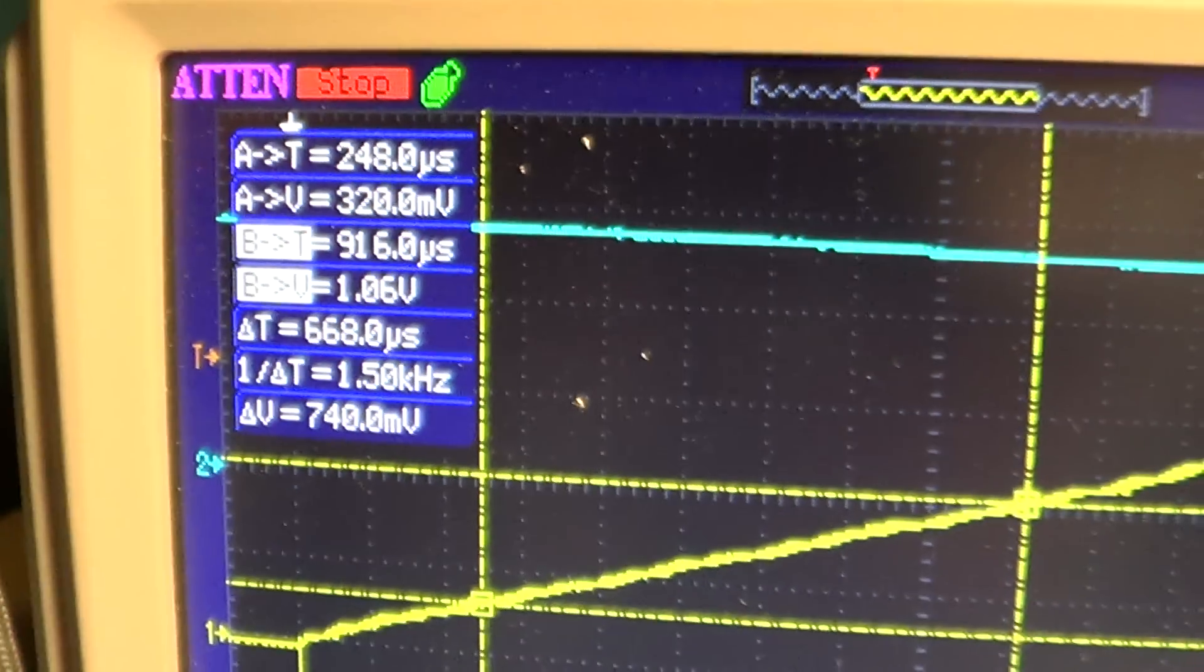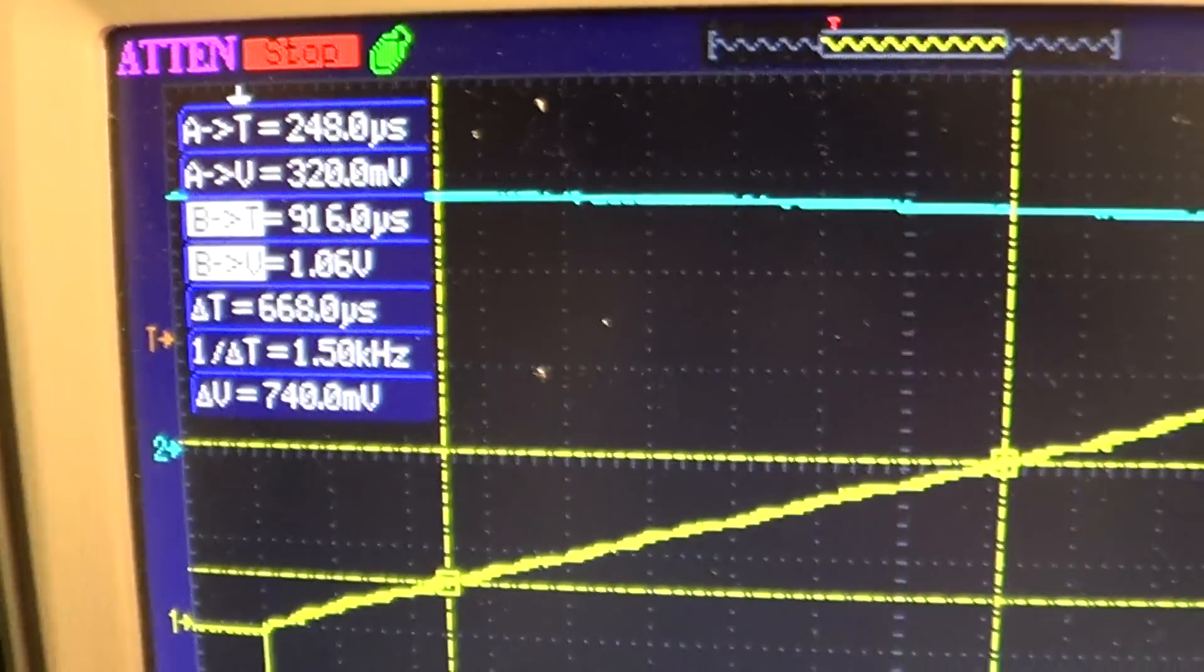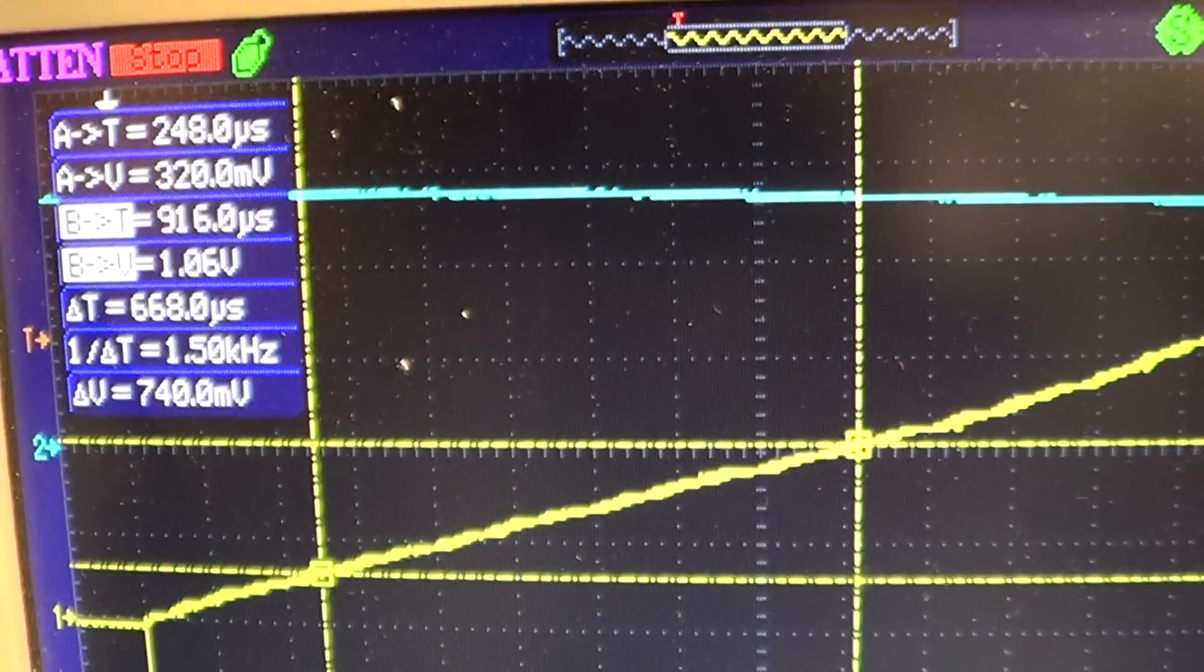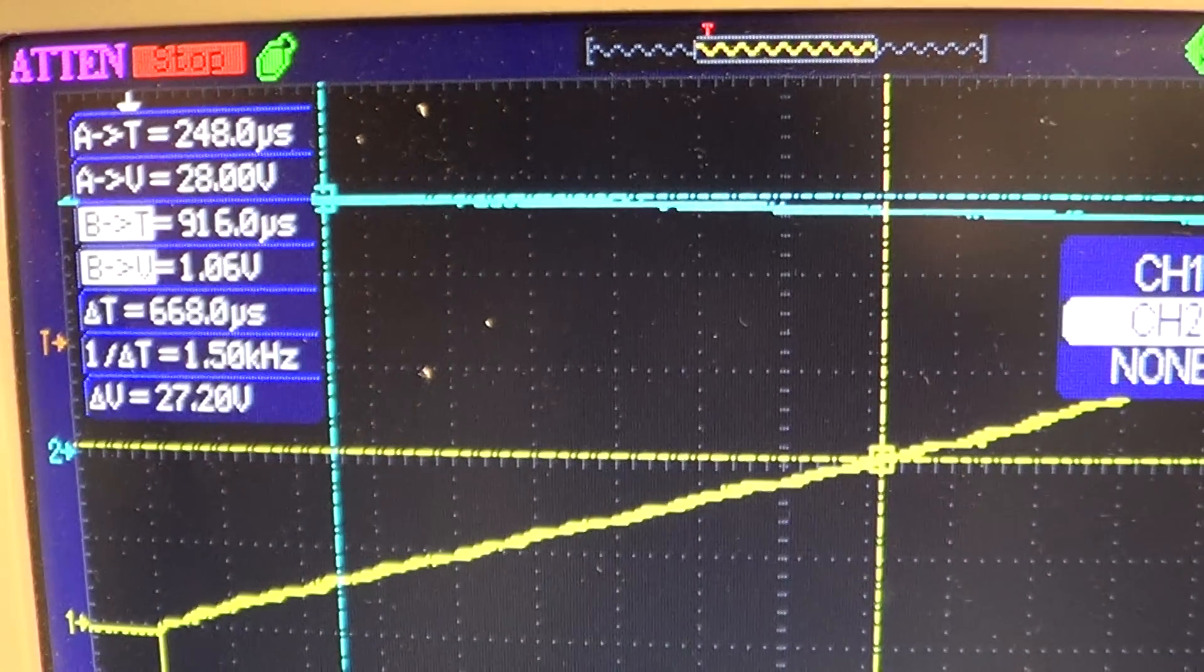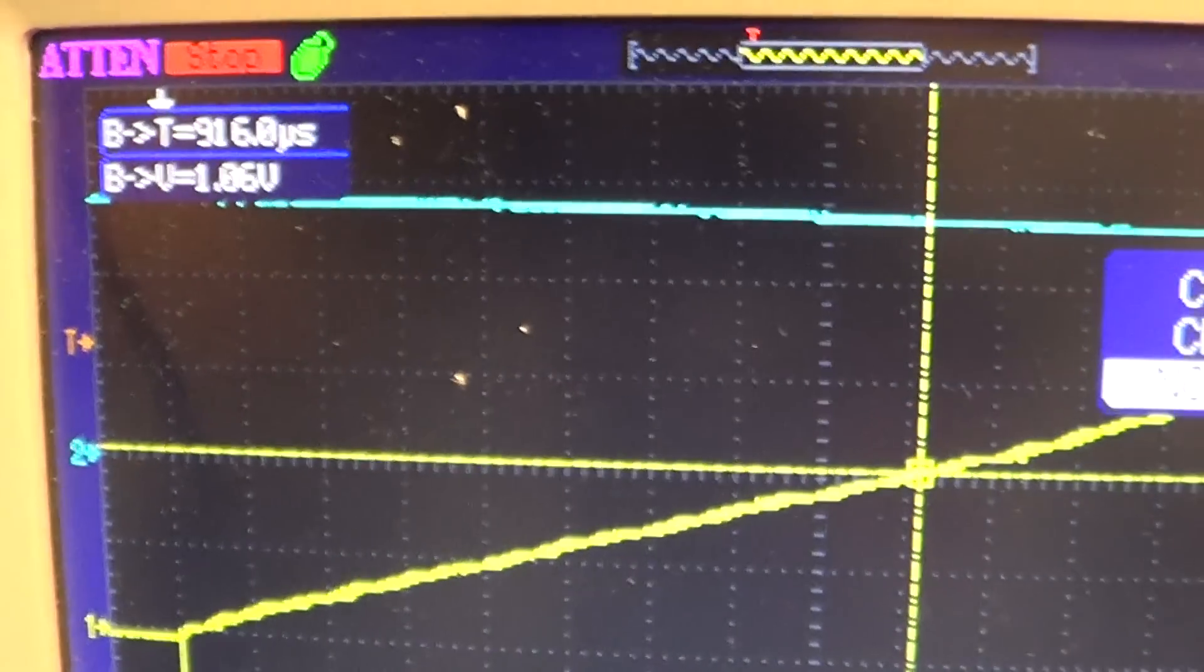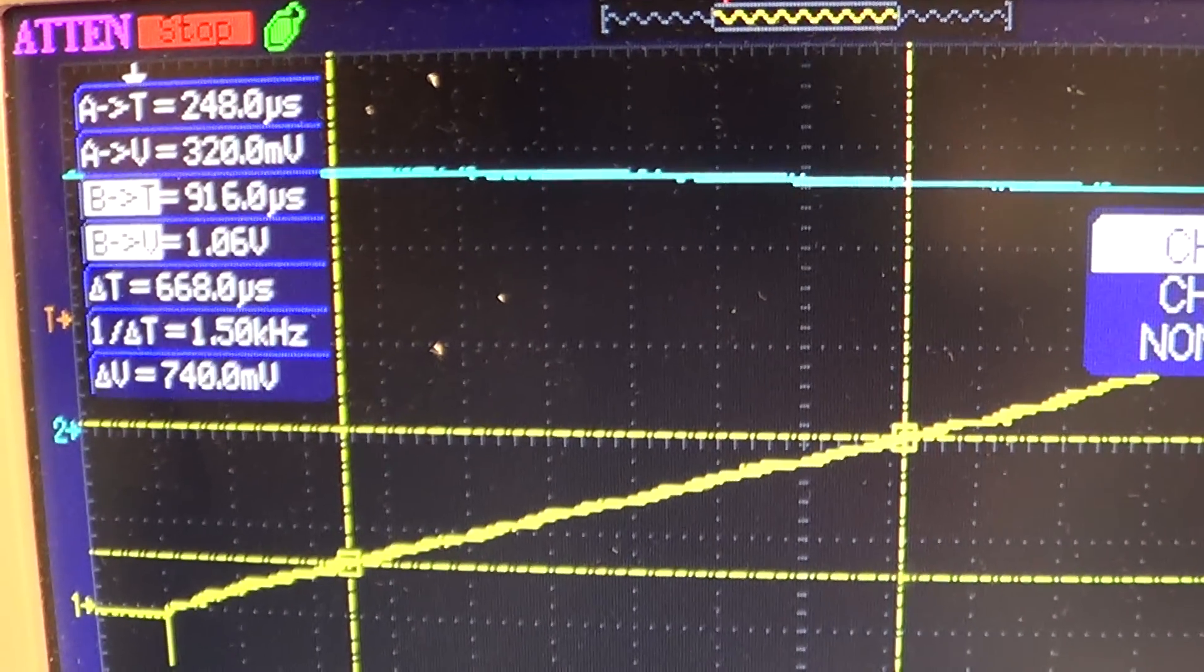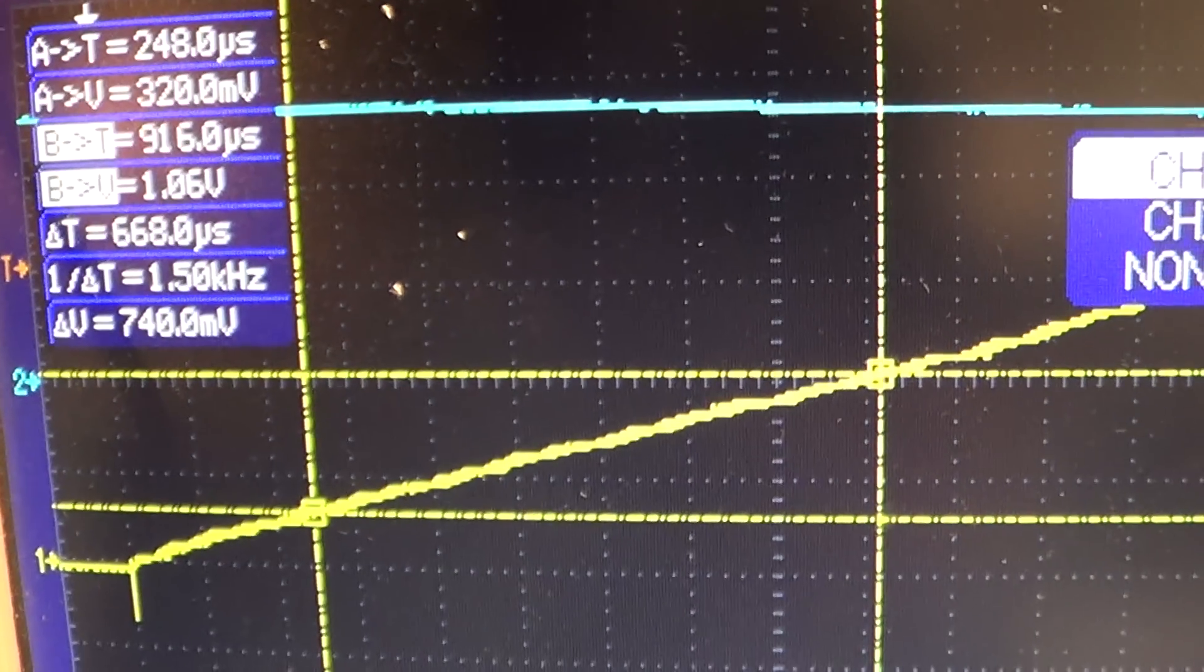To get the inductance, we take the reciprocal of that, and multiply it by the voltage, which is about 28, let's say 26 volts, times 26, is 290 microhenries.